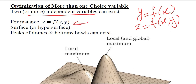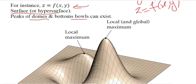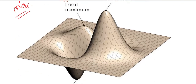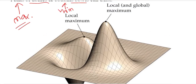This is the example we are talking about. Having more than one variable gives rise to a surface, or a hypersurface if there are more than two variables. It can give us domes and bowls, and within those domes and bowls there can be peaks and bottoms. Looking at this diagram, you can see that it is a surface with peaks and bowls in it.